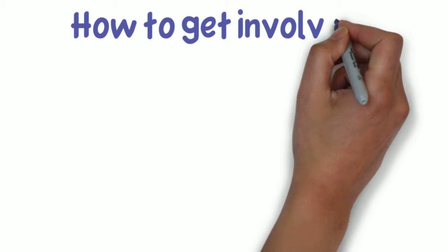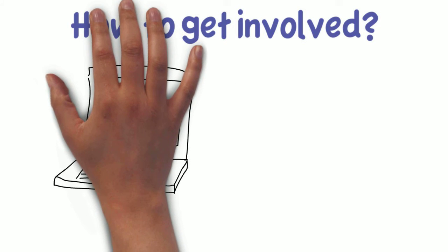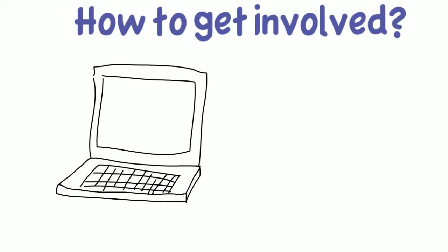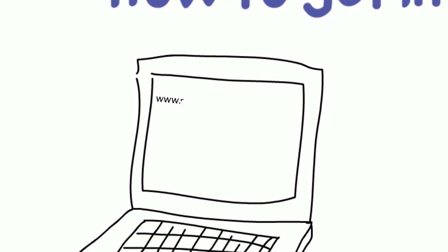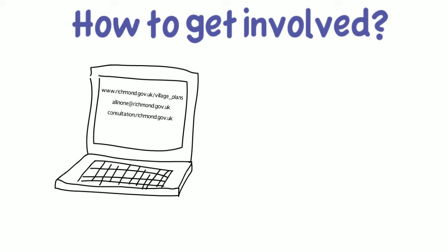At the heart of the process is an ambition that local people are involved in the discussions about their village plan. You can get involved by finding out a little more online, taking part in a consultation, attending an event, or inviting a community links officer to your group meeting.